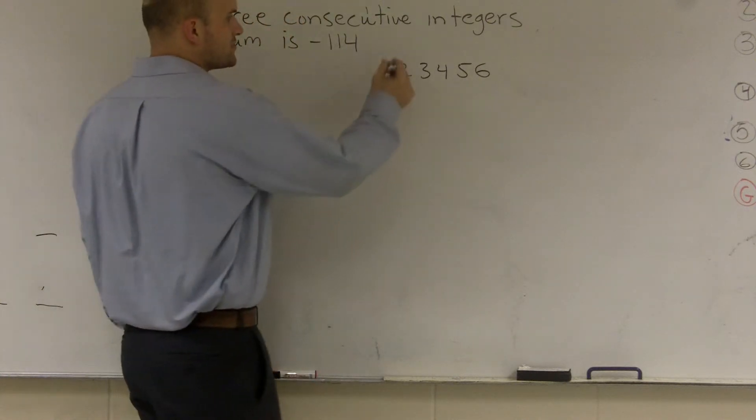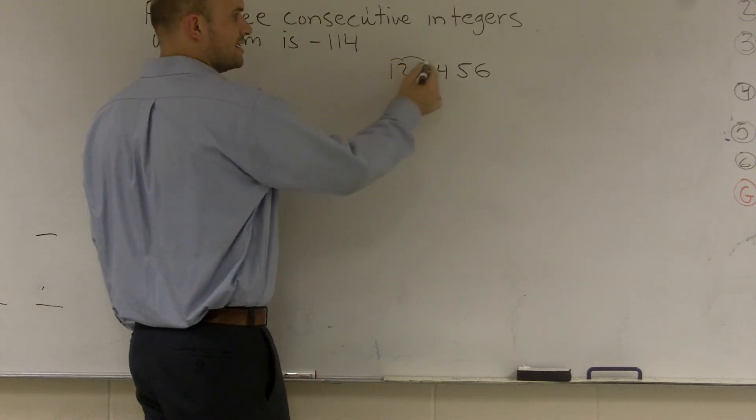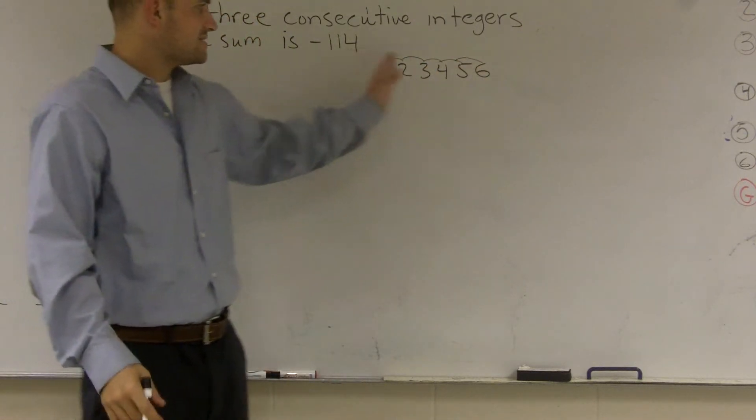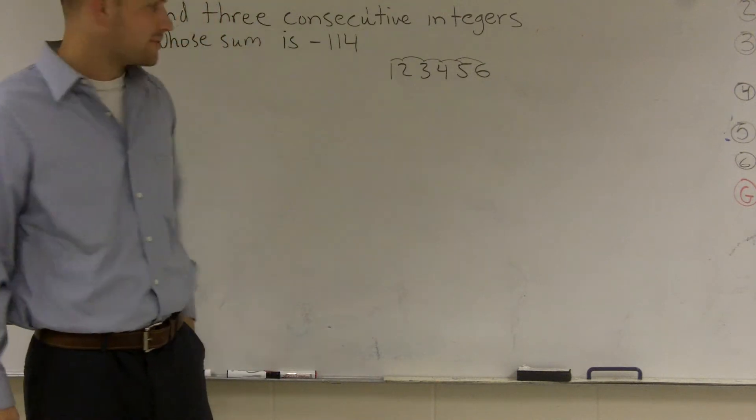Consecutive numbers are numbers right next to each other. So one, two, three, four, five, six, these are all consecutive numbers. They consecutively go to the next number.